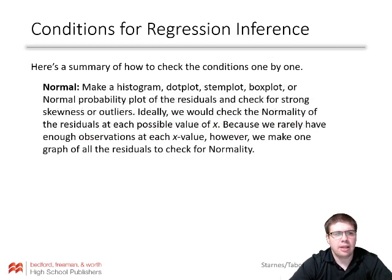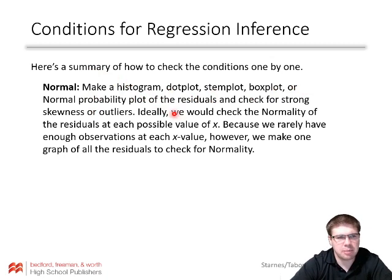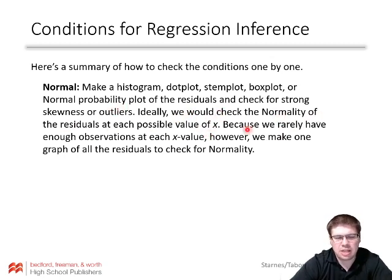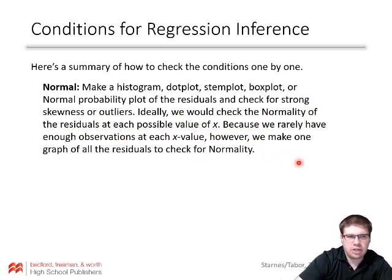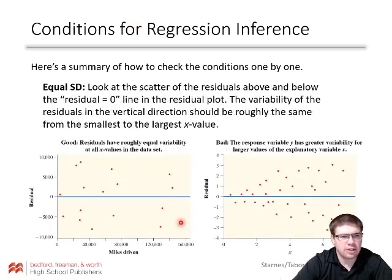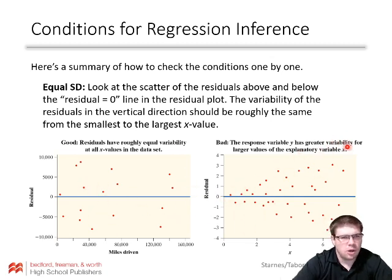For normal: make a histogram, dot plot, stem plot, box plot, or normal probability plot of the residuals and check for strong skewness or outliers. Ideally we'd check normality at each possible value of x, but because we rarely have enough observations for each x value, we make one graph of all the residuals. For equal standard deviation: we want a nice equal spread throughout. We don't want residuals getting larger or narrower — that throws off the equal standard deviation condition.